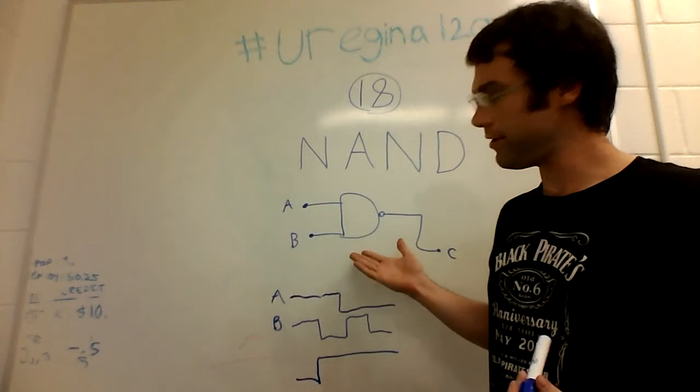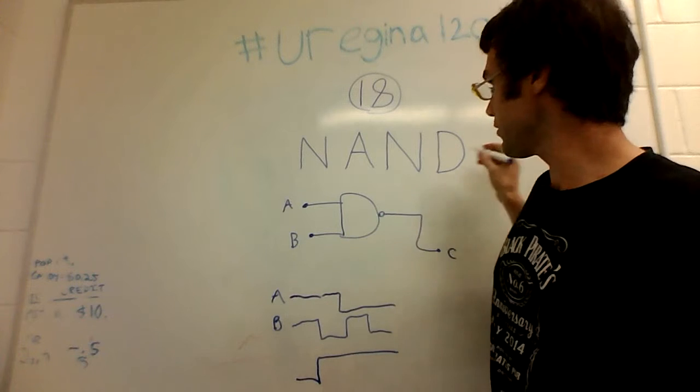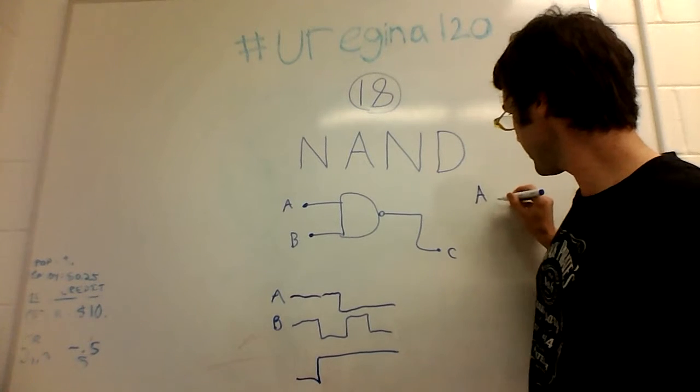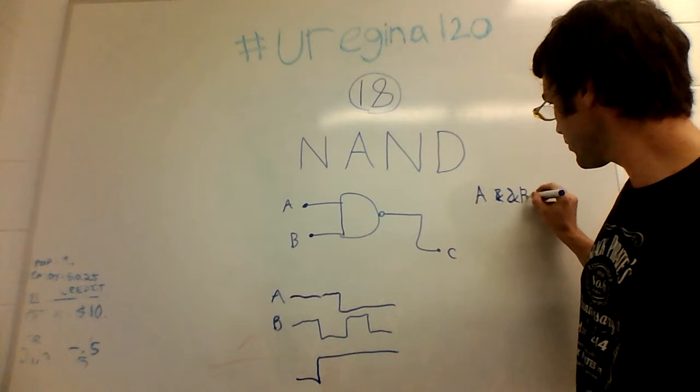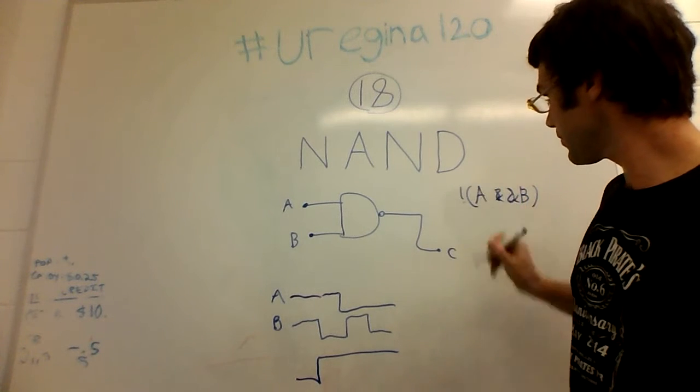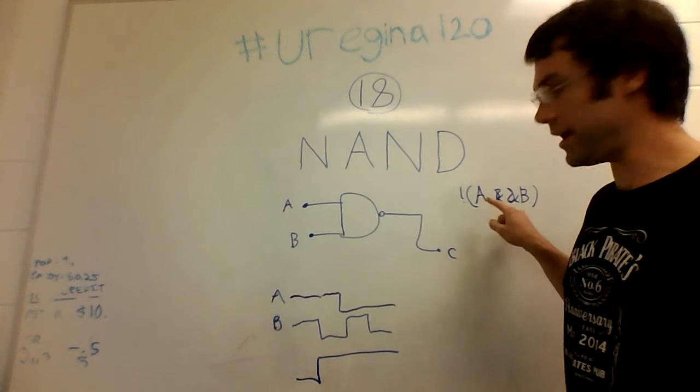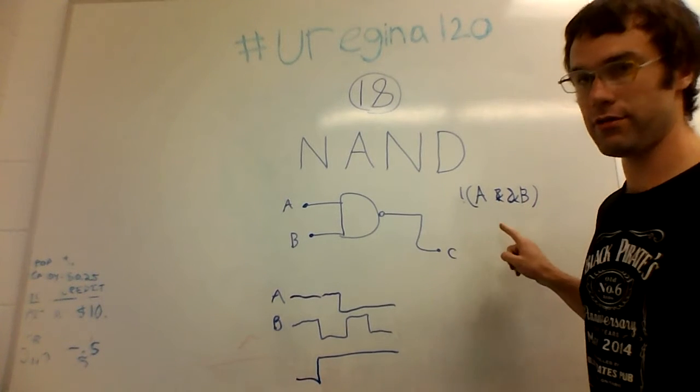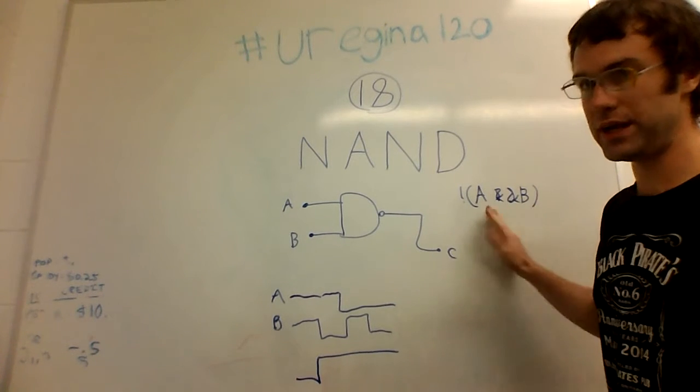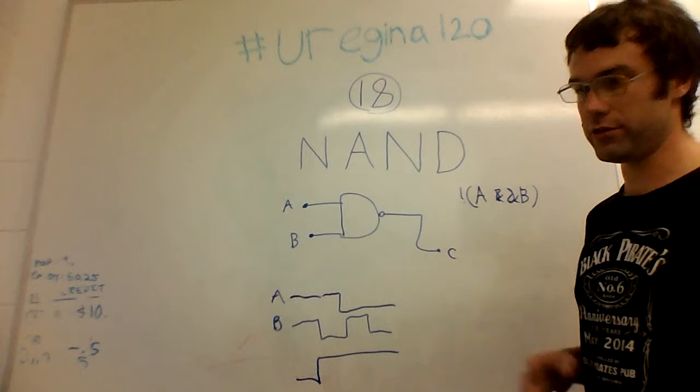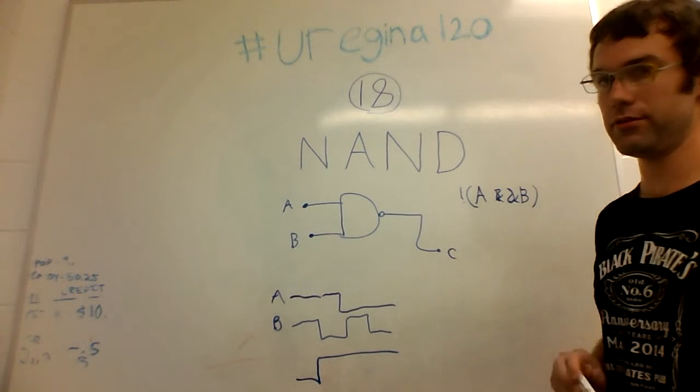If we're looking at this in terms of software, if the two values that come in are both true, then this A NAND B returns false. Otherwise, if A or B is not true, then A NAND B returns false.